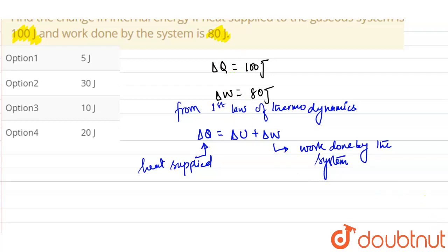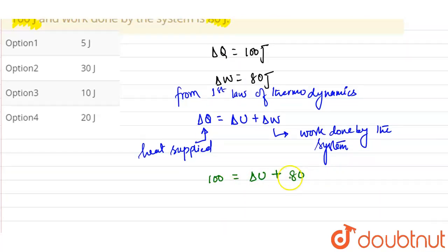So substituting the respective data, we get ΔQ as 100 joules that will be equal to change in internal energy plus work done by the system is 80 joules. So the change in the internal energy from here comes out as 20 joules. So option 4 is correct.